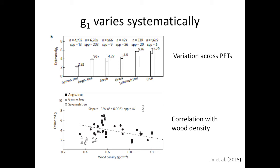G1 does vary systematically across PFTs. A 2015 paper led by Yan Shi Lin collated a large body of stomatal conductance data and found systematic differences: lower G1s in gymnosperms than in angiosperms, shrubs, grasses, and crops. Those data are available on Figshare. G1 also appears to be related to wood density, which is a nice property — and clearly it's a trait, because it correlates with something else.